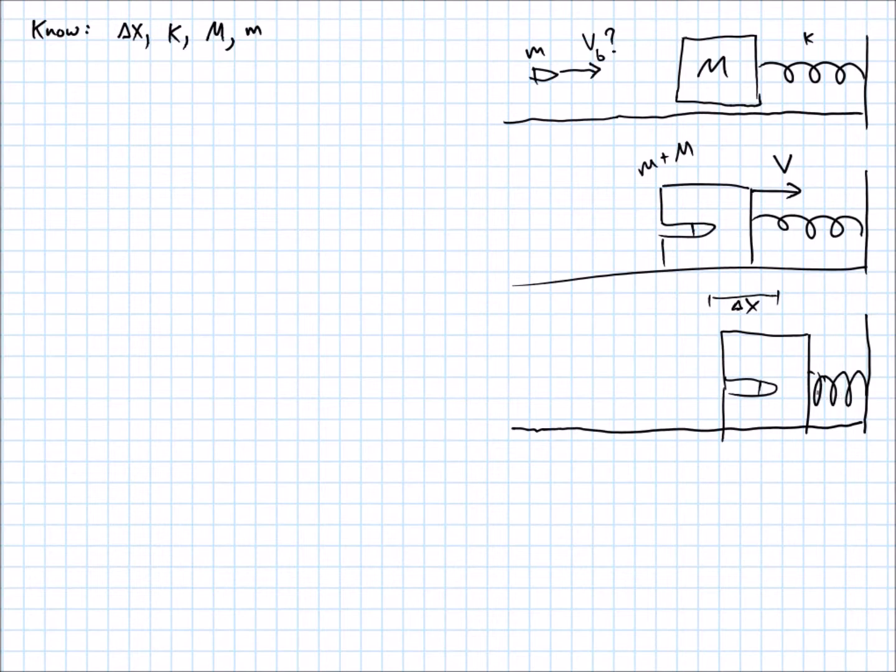I went from having kinetic energy to having potential elastic energy. So it looks like maybe, since I know this compression distance X, I should be able to find what velocity the masses together started with, V. And then once I know that V, I should be able to find the initial speed of the bullet.